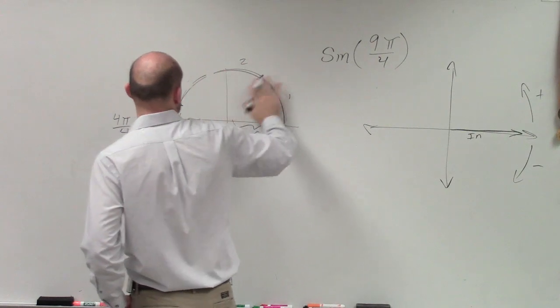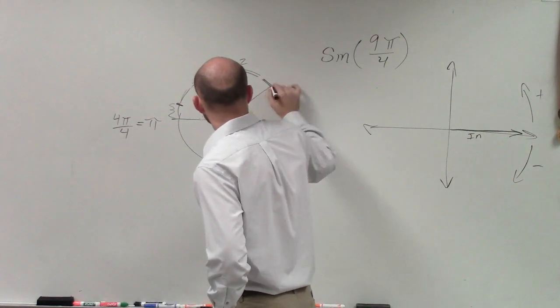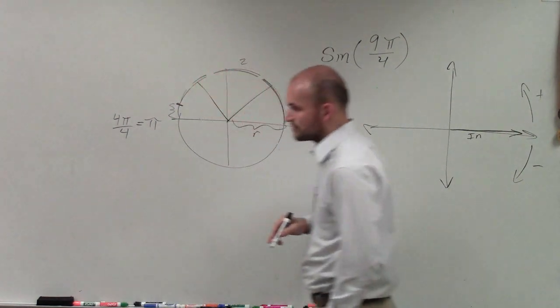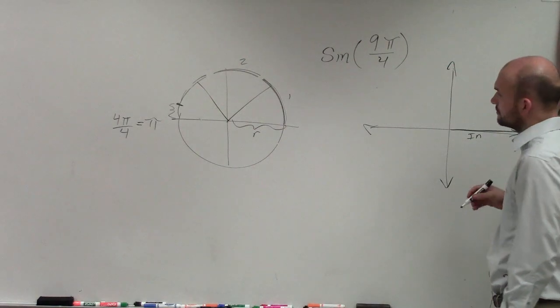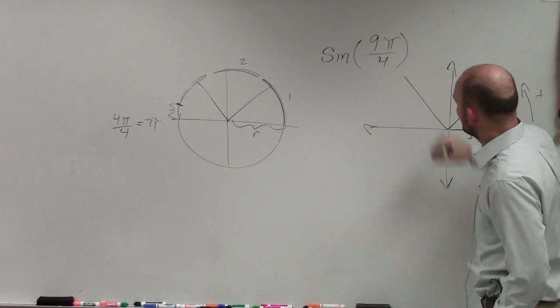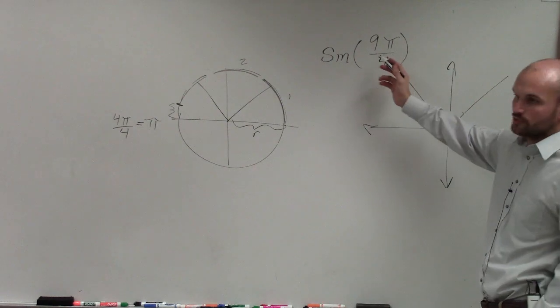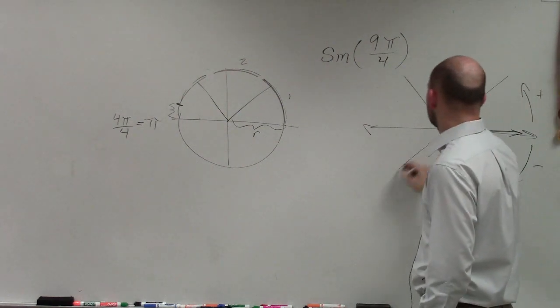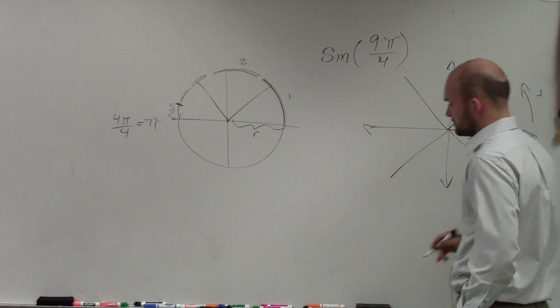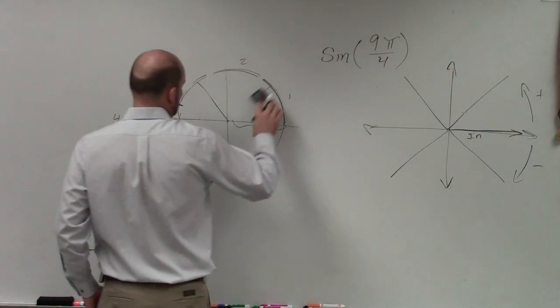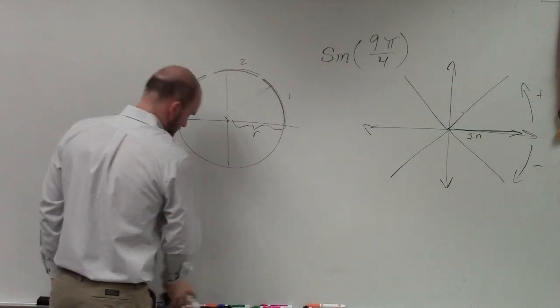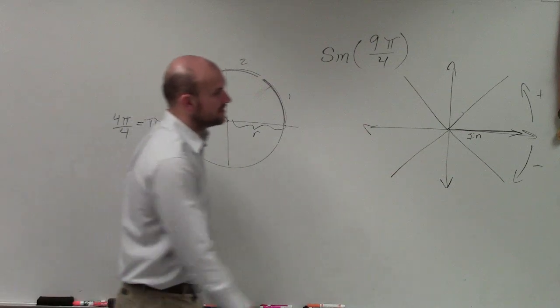Let me break up my quadrant into fourths. This is greater than 4π over 4, so I'm going to break the bottom half into fourths. I'll use this one for my unit circle.